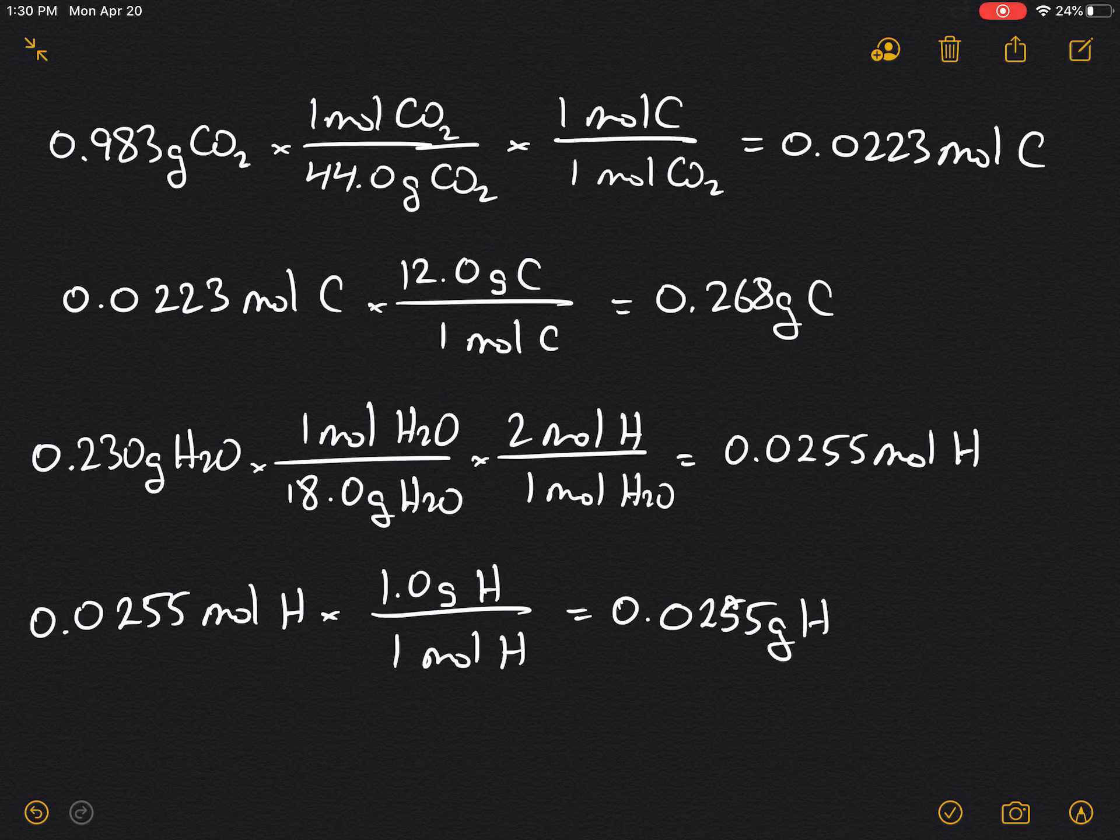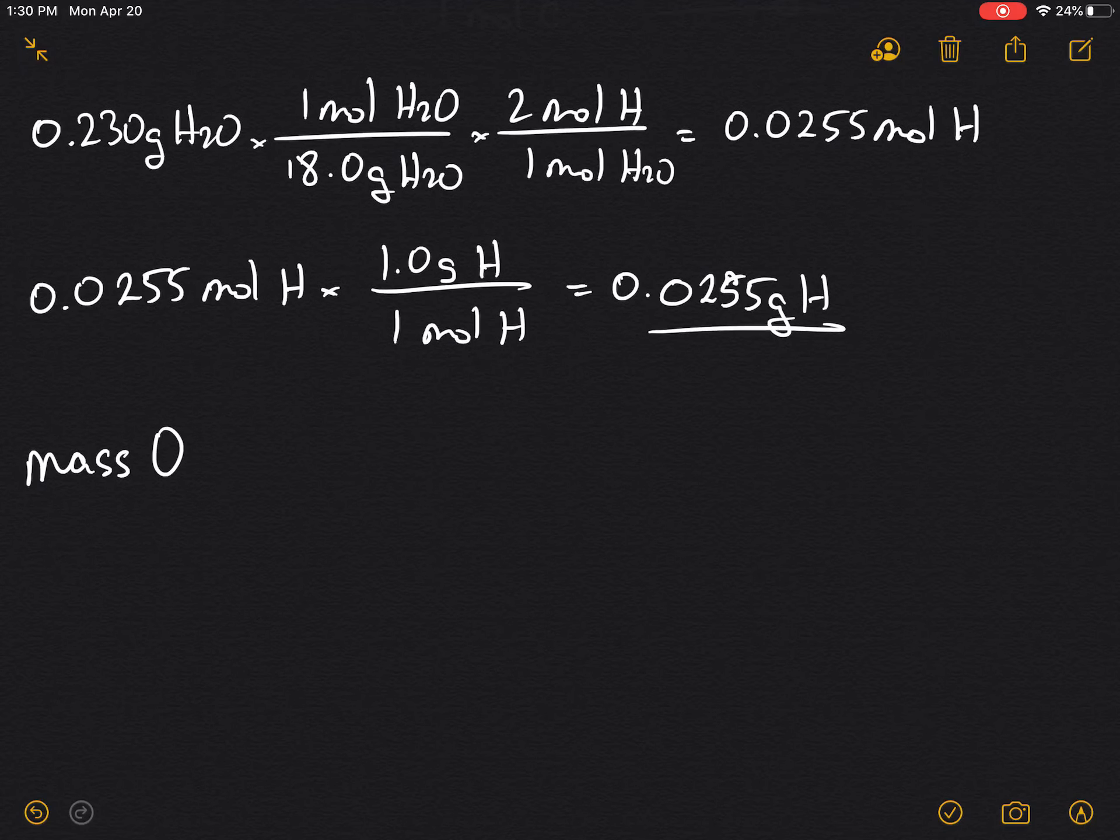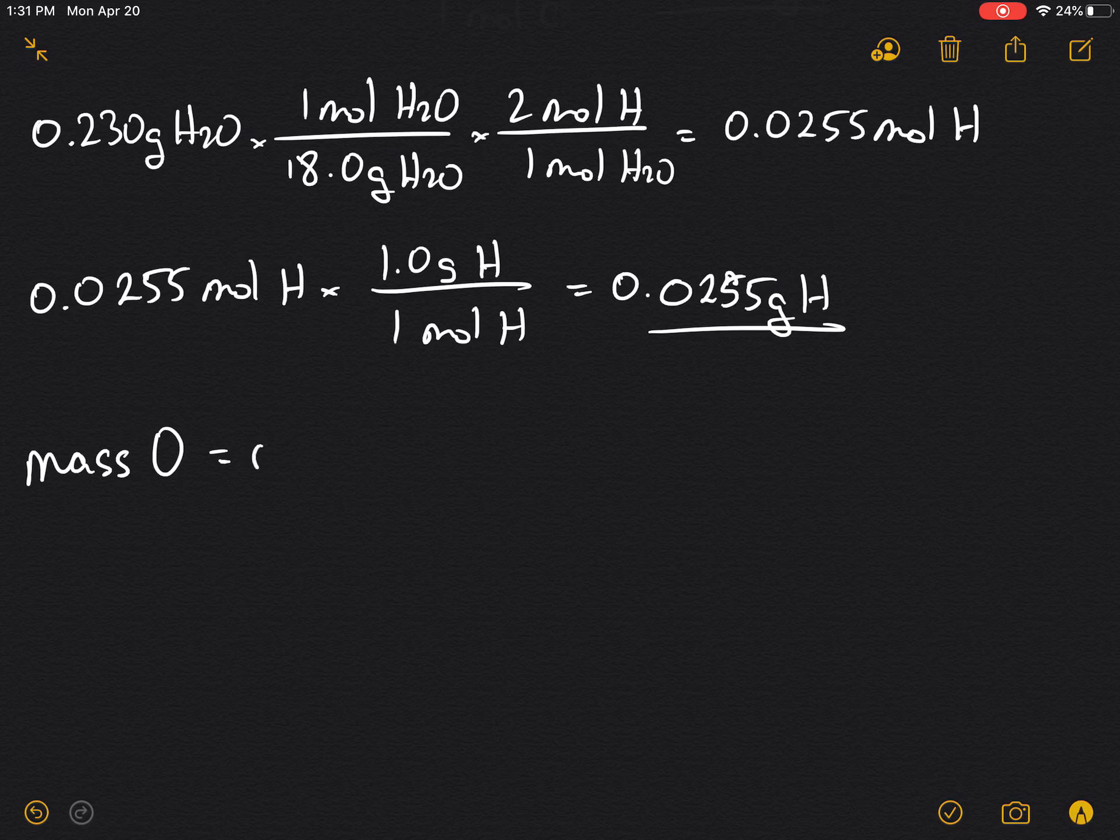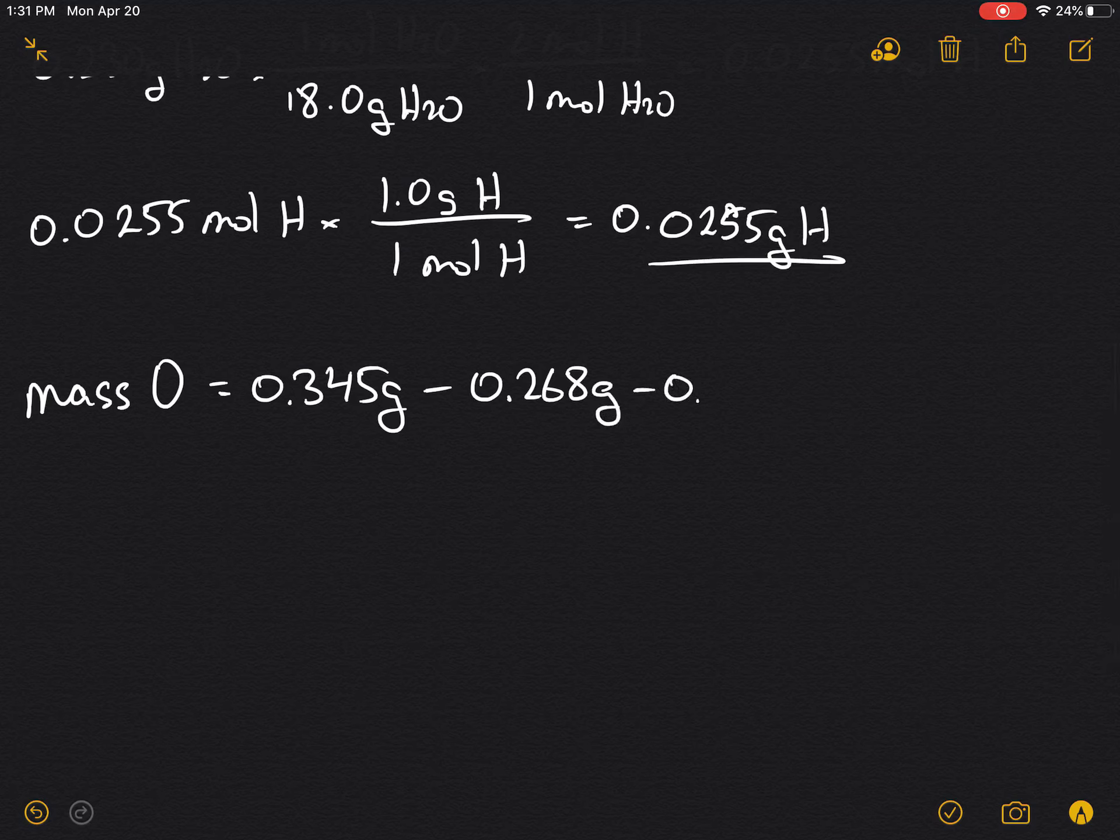So now we have the grams of carbon and the grams of hydrogen in the paracresol. If we want to define the mass of oxygen, that's going to be equal to 0.345 grams that we started with, subtract the mass of carbon which is 0.268 grams, subtract the mass of hydrogen 0.0255 grams, and the mass of oxygen works out to be 0.0515 grams.